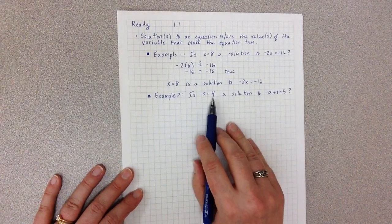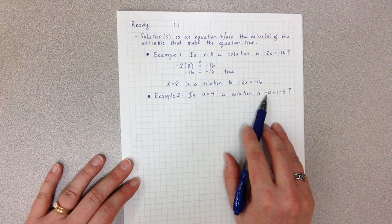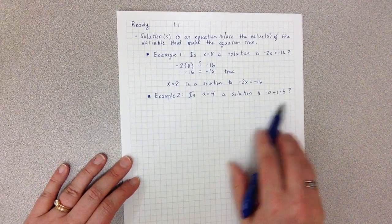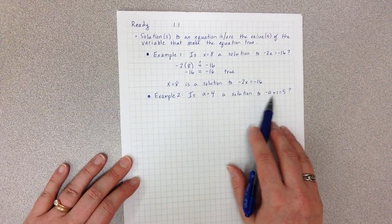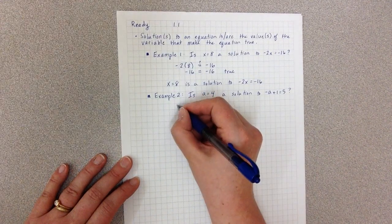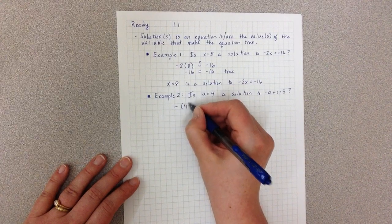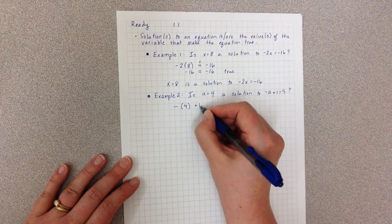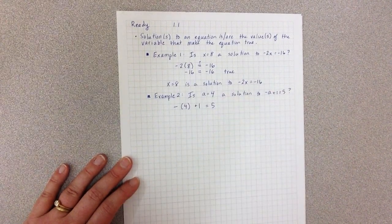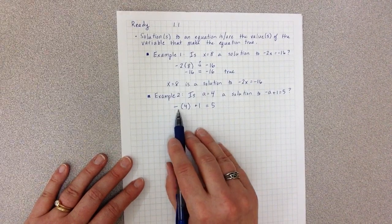So again, I want to know, if I put 4 in for a, do I get a true statement? Do I get a statement that says 5 equals 5? So my equation says the negative of whatever my a is, plus 1, equals 5. And I simplify the left-hand side.